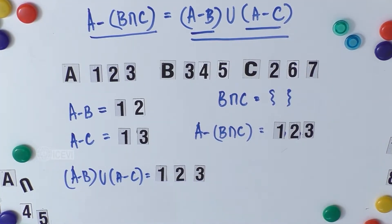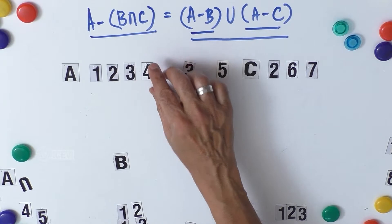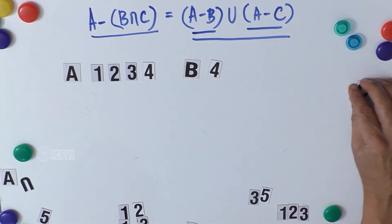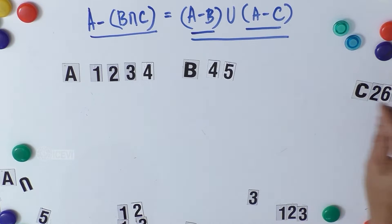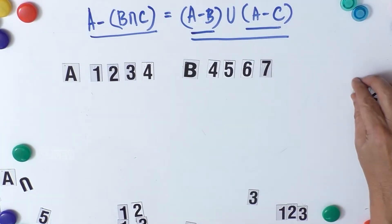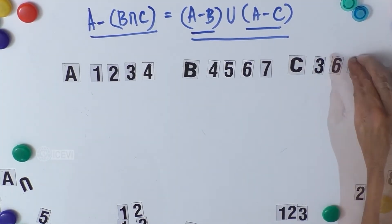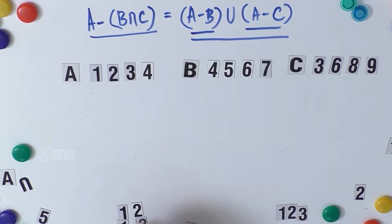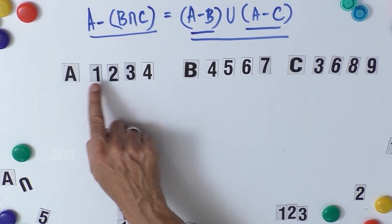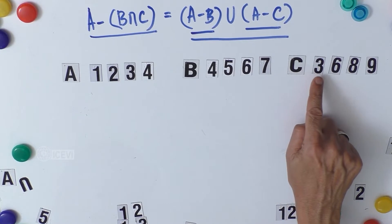Let us take another example. Set A has four elements: 1, 2, 3, 4. Set B has four elements: 4, 5, 6, 7. Set C has four elements: 3, 6, 8, 9. We will again prove De Morgan's Law of set difference using these new sets.